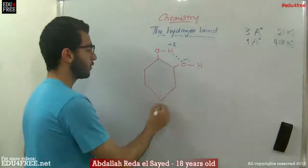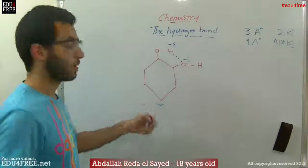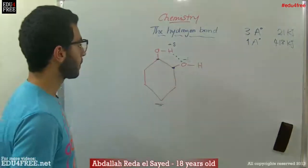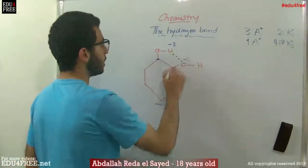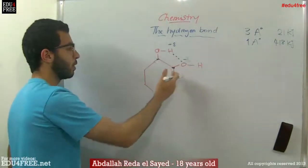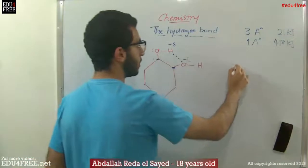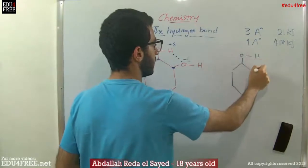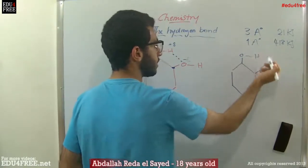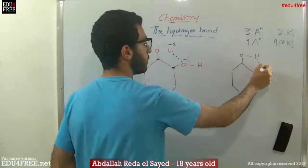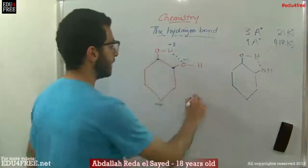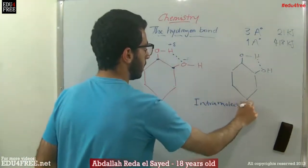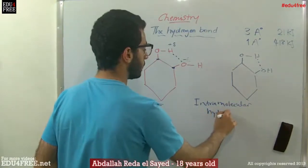This of course affects the boiling point and melting point of the compound. Because if the substitution is in these positions, a hydrogen bond is formed inside the molecule, so hydrogen bonds between this molecule and another molecule cannot be formed. It's easier for the compound to form a hydrogen bond inside the molecule. This is called an intramolecular hydrogen bond.